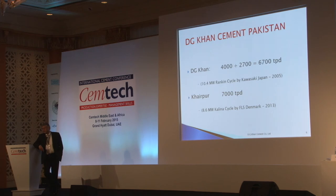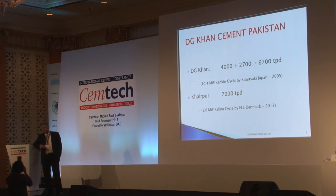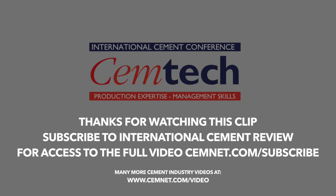DG Khan Cement Company has two cement plants with three kilns in operation. Two kilns are installed at DG Khan city, which is in the center of the country. There we have a 4,000-ton FLS plant commissioned in 1997, and a 2,700-ton plant supplied by Ube Japan, commissioned in 1986. On the Ube and FLS plants, we have installed a conventional Rankine cycle for waste heat recovery, capable of producing 10.5% from waste heat recovery.